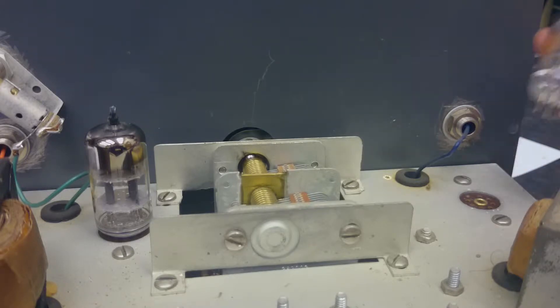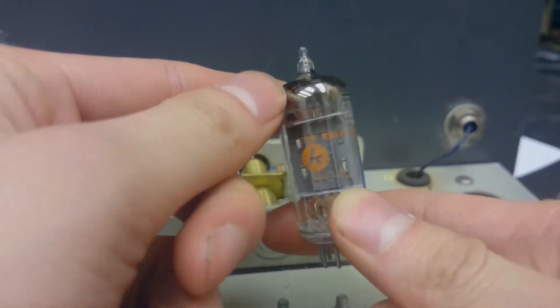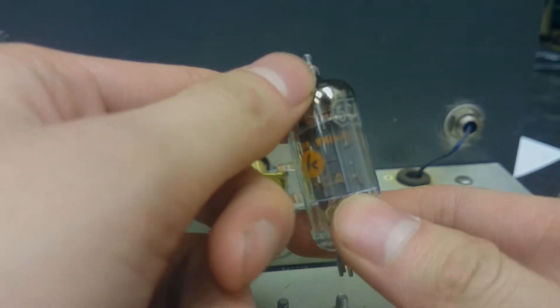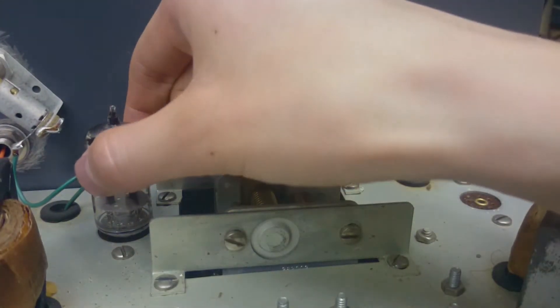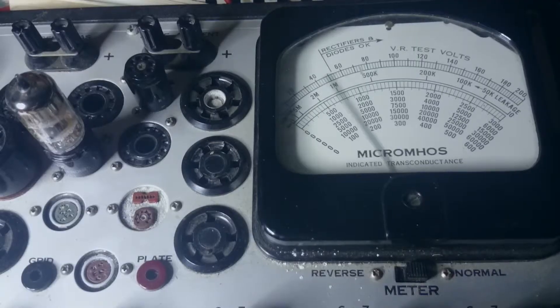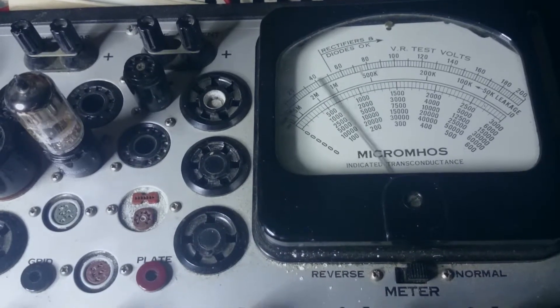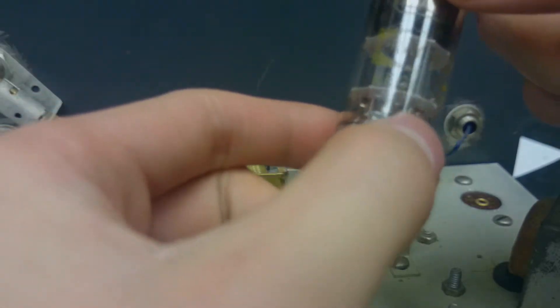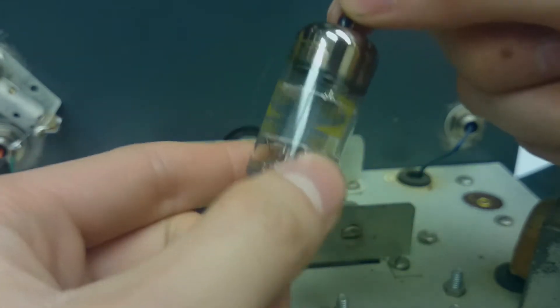Here's the original 6A4. You can see there's a Knight logo on there, so we know this is the original tube.